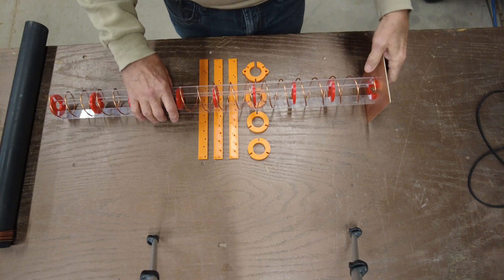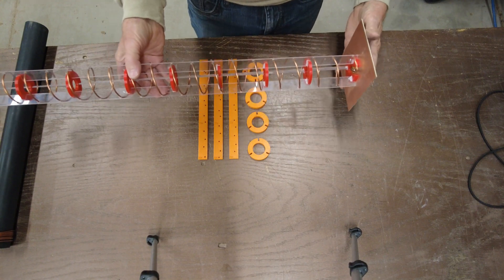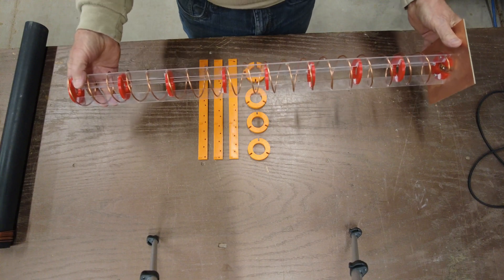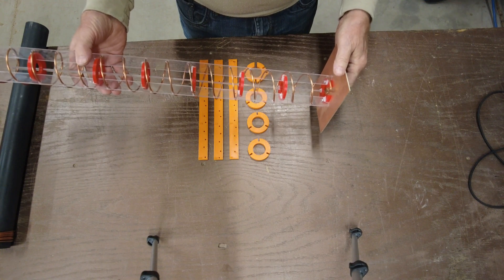Hi, my name is Dave, amateur radio call sign AB7E, and I've made several helical antennas for satellite work.